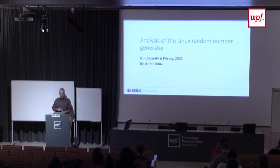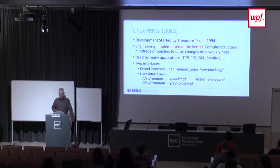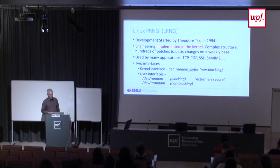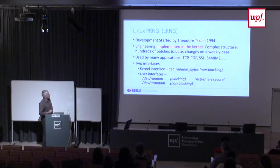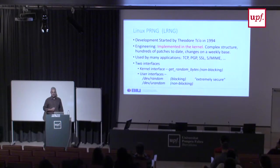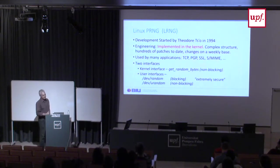Now I'll describe the attack on Linux, which was actually earlier work, before the attack on Windows. The Linux random number generator was essentially generated by a single person from 1994 until this day. It's implemented in the kernel, which is better than user space because it's harder to break in and get to the state. It's very complex and changed on a nearly weekly basis. The design I'm going to describe has been changed afterwards, but I'll describe what was happening then.